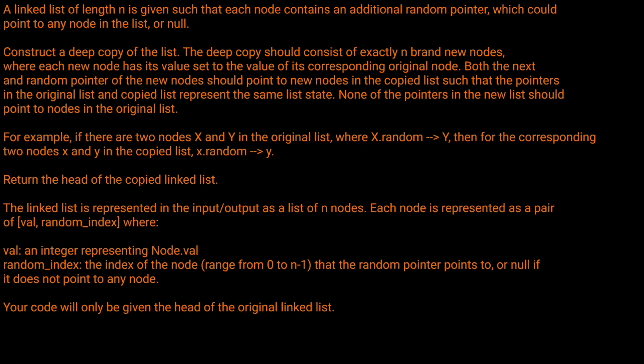A linked list of length n is given such that each node contains an additional random pointer, which could point to any node in the list, or null. Construct a deep copy of the list. The deep copy should consist of exactly n brand new nodes, where each new node has its value set to the value of its corresponding original node. Both the next and random pointer of the new nodes should point to the new nodes in the copied list, such that the pointers in the original list and the copied list represent the same list state. None of the pointers in the new list should point to nodes in the original list.